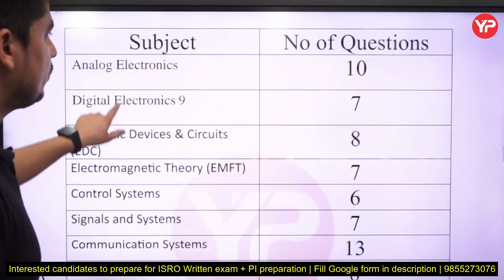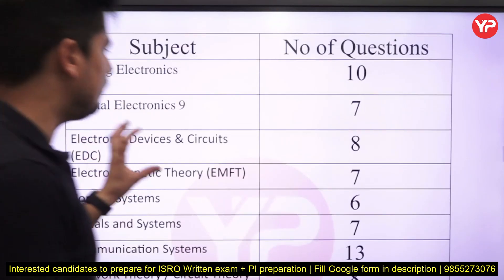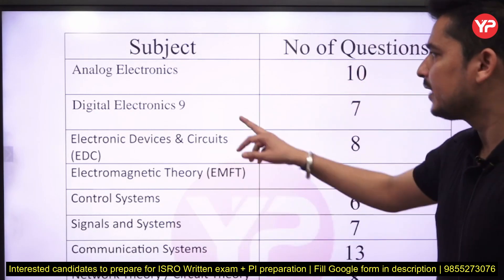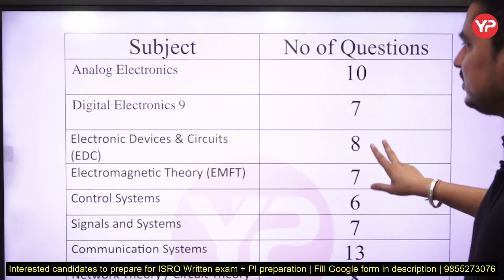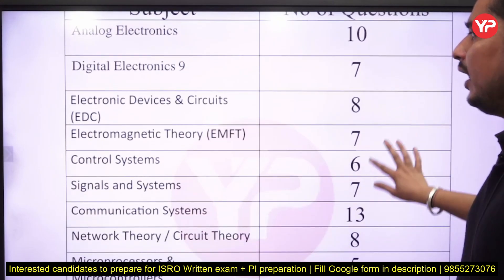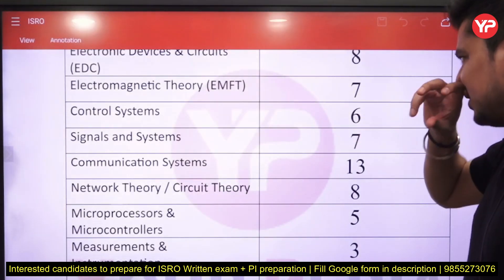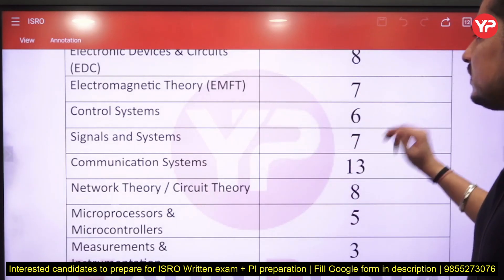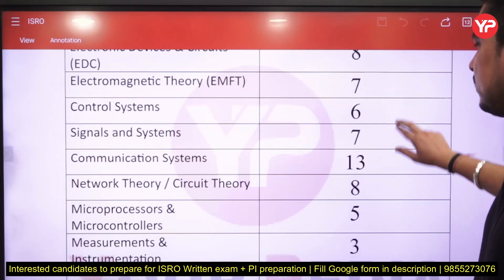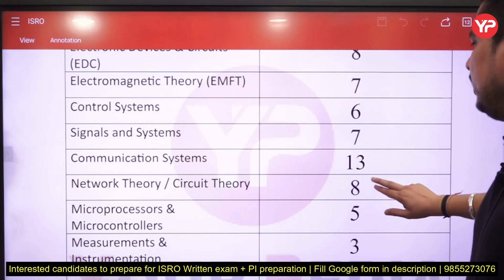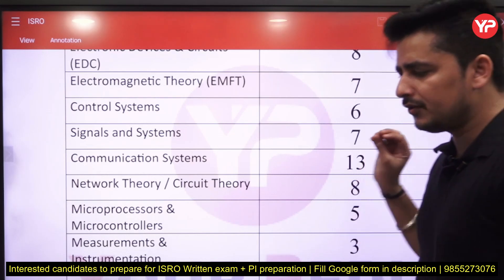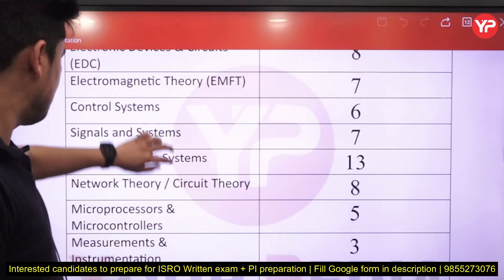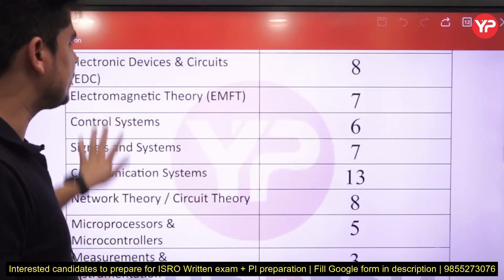Coming to the difficulty level: analog electronics is moderate, digital electronics is easy, EDC is moderate, electromagnetic field theory is above moderate — not highly difficult but above moderate. Control system is moderate, signals and systems is moderate, communication is moderate, network theory is slightly easy, microprocessor and microcontroller is easy if you have studied it, and measurement and instrumentation is also easy.